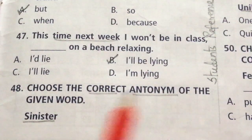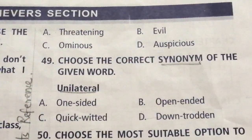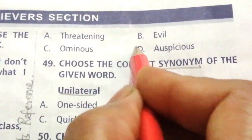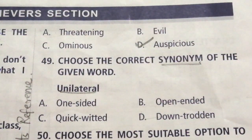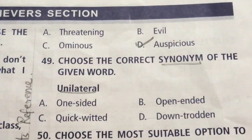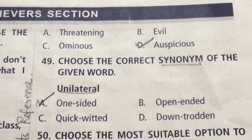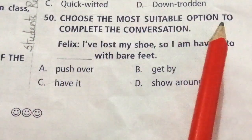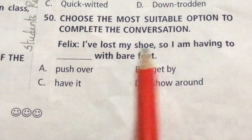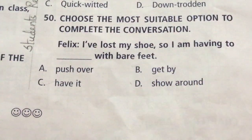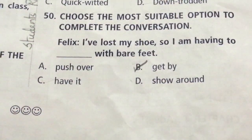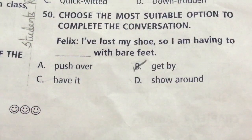Question 48: Choose the correct antonym of Sinister. Options: Threatening, Evil, Ominous, Auspicious. The answer is D: Auspicious. Question 49: Choose the correct synonym of Unilateral. Options: One-sided, Open-ended, Quick-witted, Downtrodden. The answer is A: One-sided. Question 50: Choose the most suitable option to complete the conversation — Felix: I have lost my shoe, so I am having to dash with bare feet. Options: Push over, Get by, Have it, Show around. The answer is B: Get by. I am having to get by with bare feet.